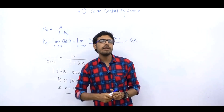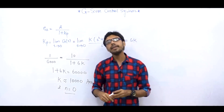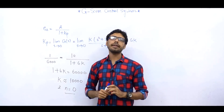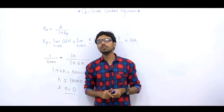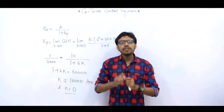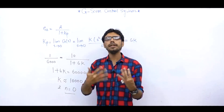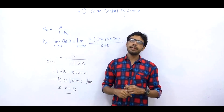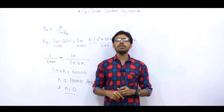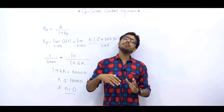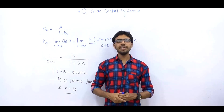यह जो हमारा case था — इसमें directly UNITY FEEDBACK SYSTEM लिया था। Next जो कल का lecture आने वाला है वो भी STEADY STATE ERROR का ही होगा — उसमें भी K find करना है, लेकिन वो होगा NON-UNITY FEEDBACK का case। NON-UNITY FEEDBACK में दो approaches होते हैं — एक TRANSFER FUNCTION वाला approach, दूसरे की hint दूँगा। Answer same आएगा। चलिए इस session को आज इतना ही रखते हैं — NEXT EPISODE में QUESTION NUMBER 8 के साथ मिलेंगे। तब तक के लिए सबको THANK YOU।